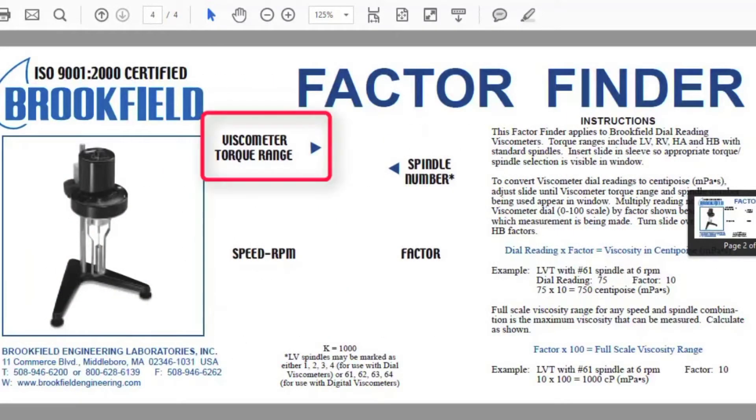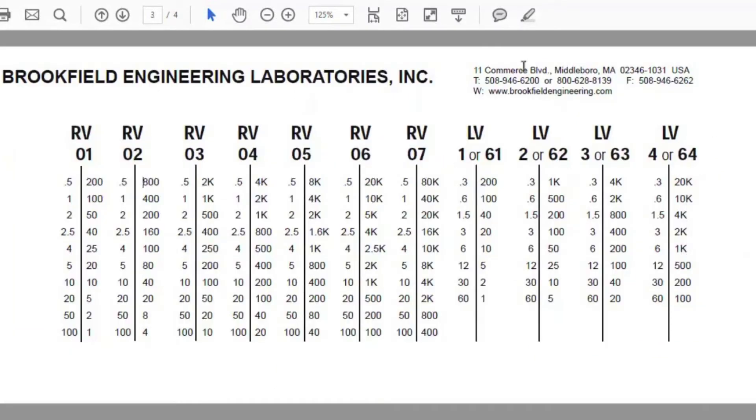To select the appropriate chart, we will have to look at the viscometer torque range and the spindle number. Because an RVDV e-viscometer was used, the conversion charts titled RV will be chosen.